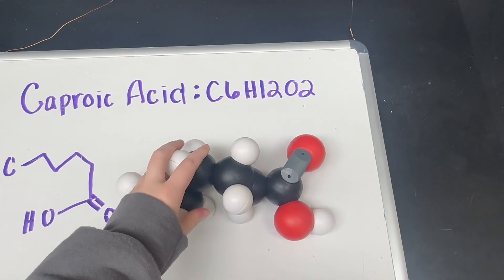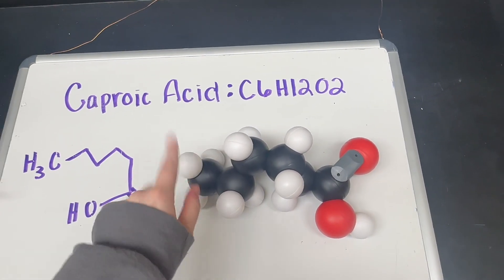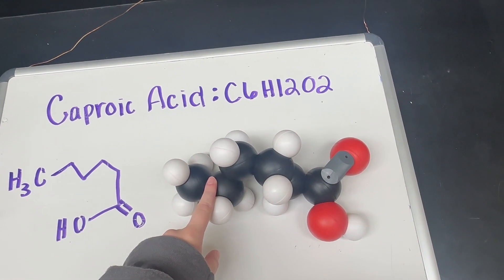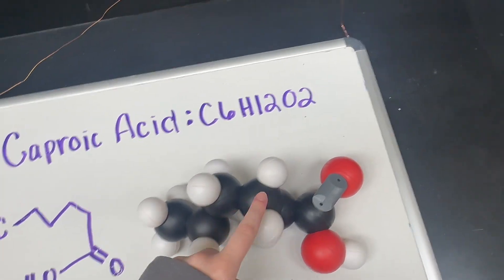The alkane chain portion of the molecule are all tetrahedral, meaning that they have a 109.5 degree angle. That would be all these five carbons right here.